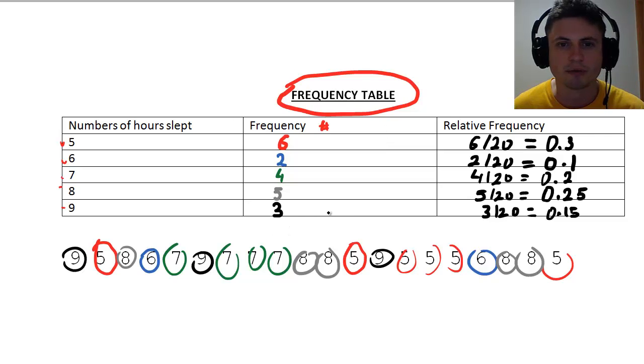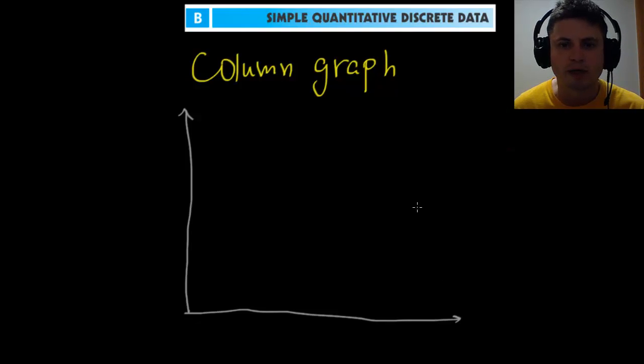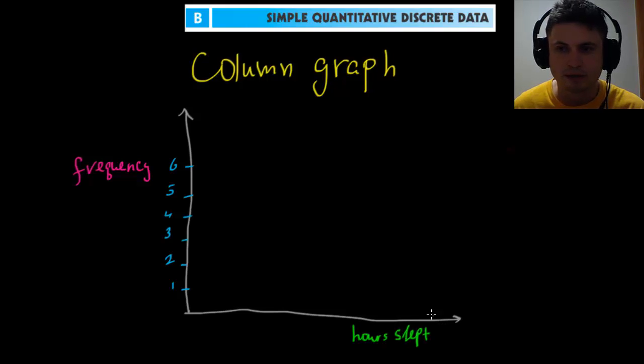Now let's create something called a column graph. This is actually one of the most popular ways of representing data, and something that you'll see a lot in real life as well. You'll have columns instead of points. On the left side, on your y-axis, in our case it's going to be frequency. This is going to be 1, 2, 3, 4, 5, and 6. And the bottom part is going to be hours slept per night. This will be 1, 2, 3, 4, 5, 6, 7, 8, and 9.